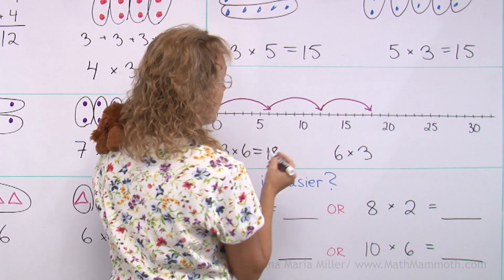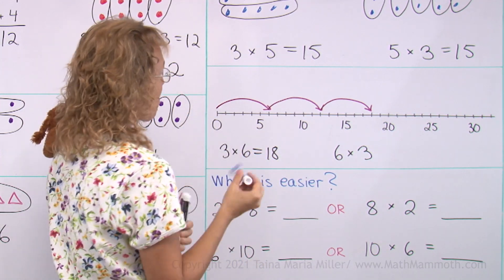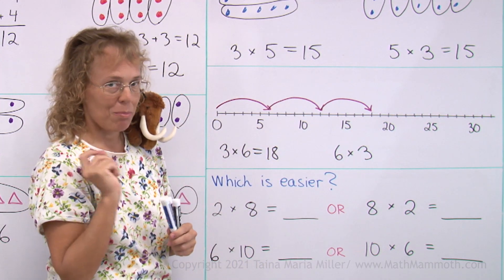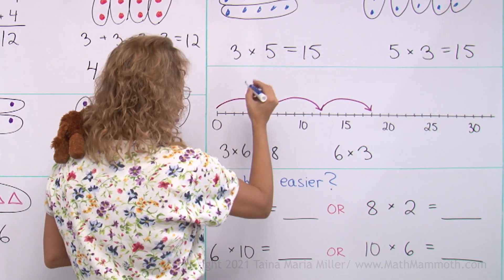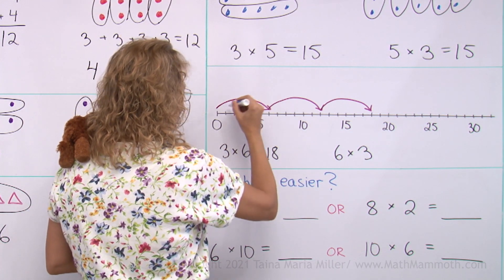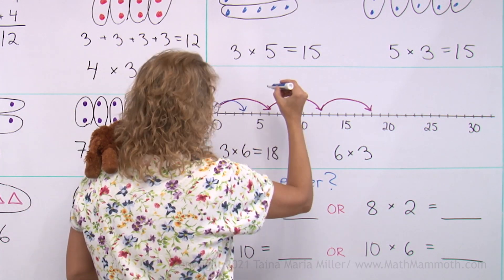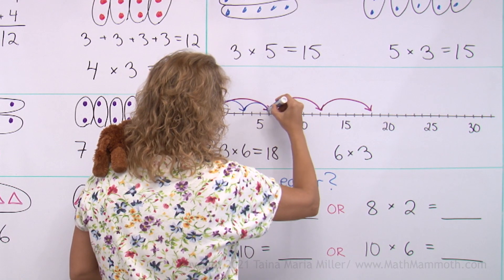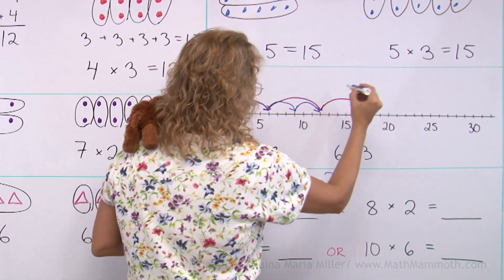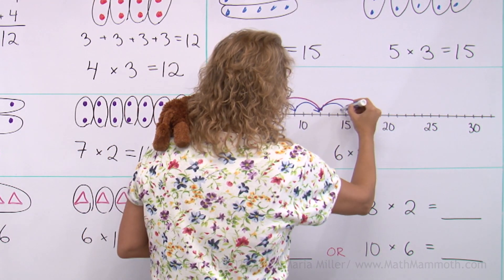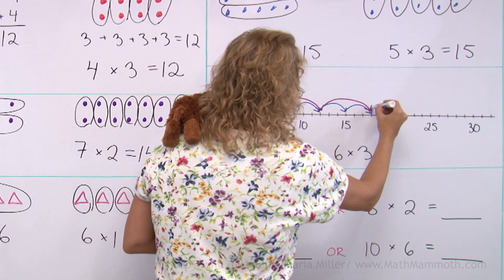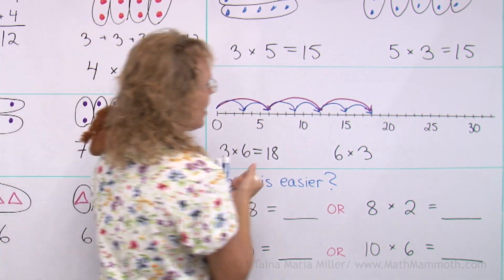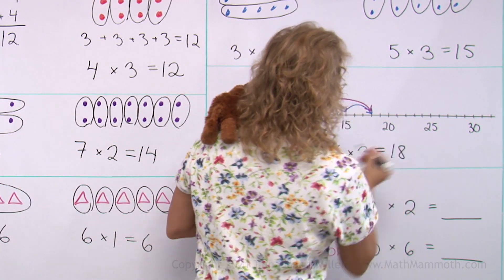And then six times three — I need to make six jumps and they are each three long. So we mark each jump of three, six times, and that also equals eighteen.